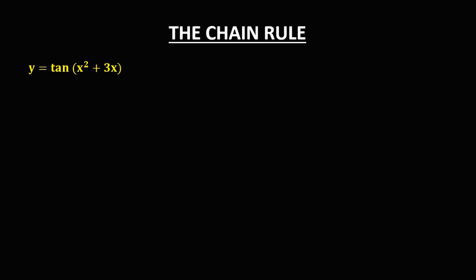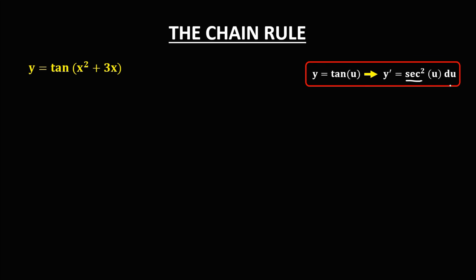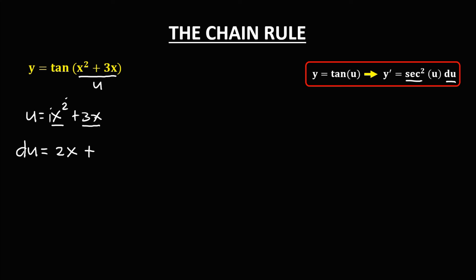For the fourth given, the derivative of tangent is secant squared u times du. Here u equals x squared plus 3x. For the derivative of u: the derivative of x squared — using the imaginary coefficient of 1, so 1 times 2 equals 2 — gives 2x. Plus the derivative of 3x, which is 3. Therefore du equals 2x plus 3.